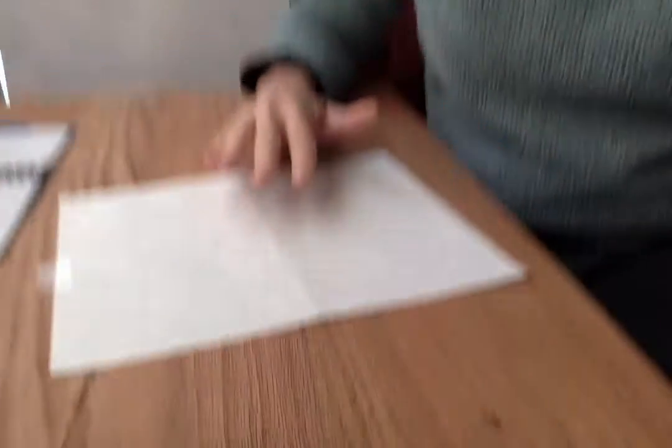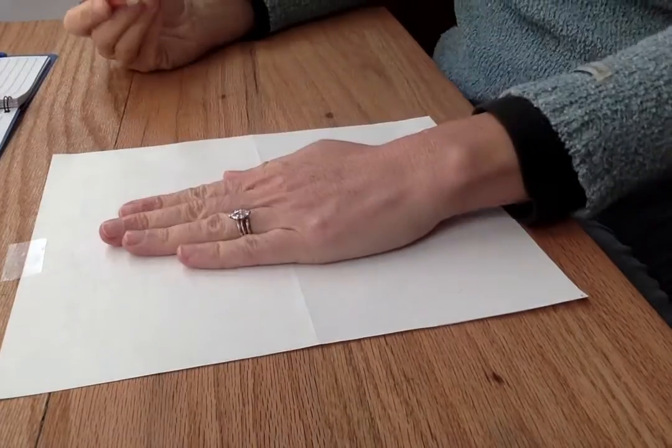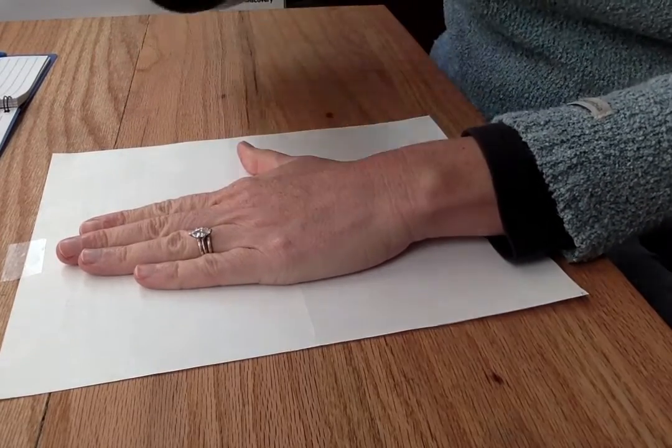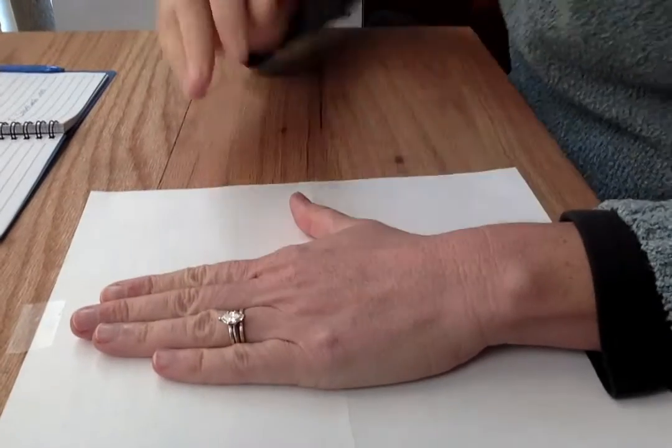So the way to make a mitten, take that off. Here is my paper. What I'm gonna do is I'm gonna put my hand on the paper with my thumb sticking out. Can you guys see that pretty well?